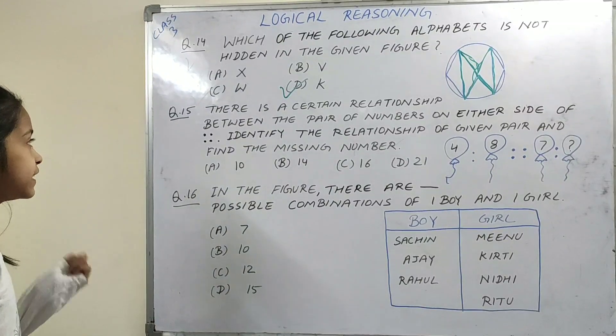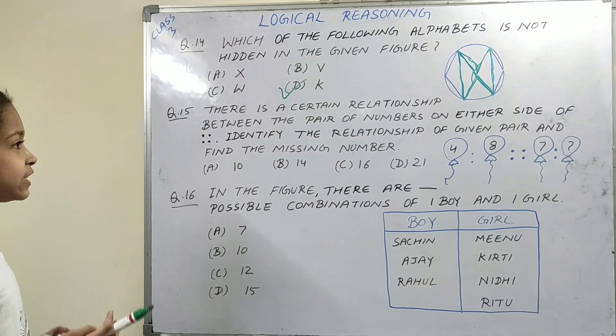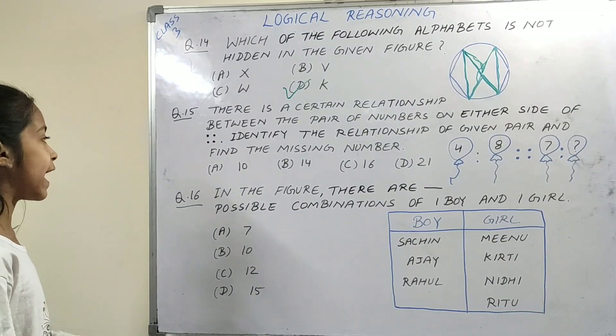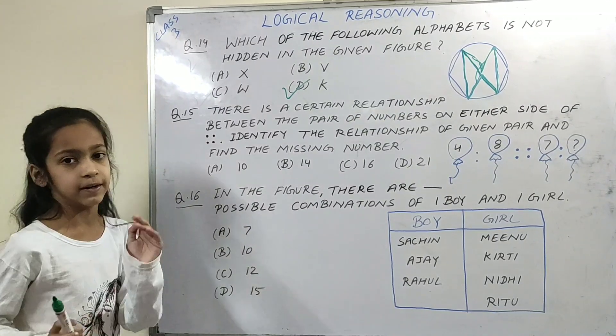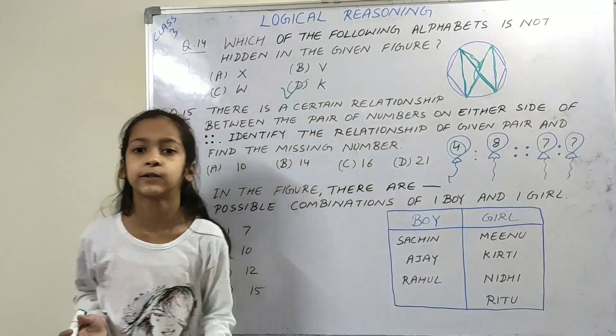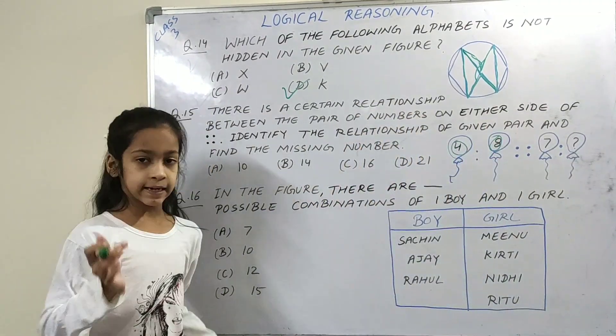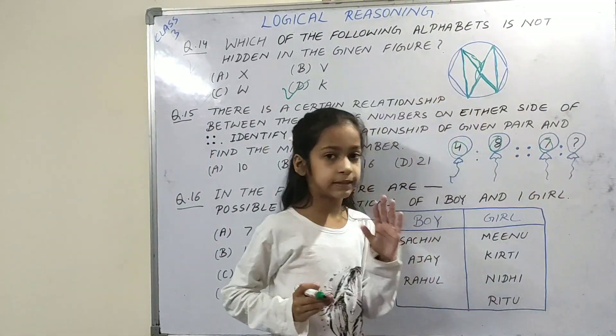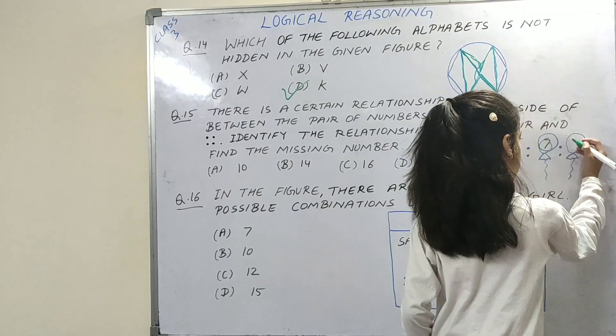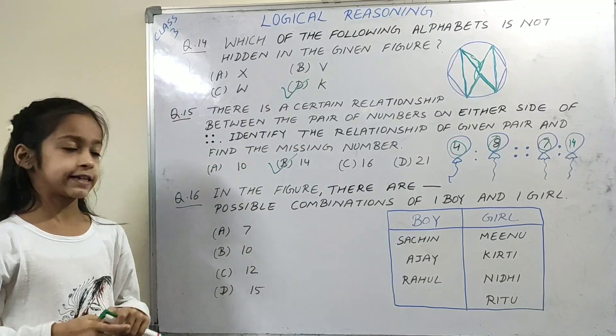Question number 15. There is a certain relationship between the pair of numbers on either side of proportion. Identify the relationship of the given pair and find the missing number. We are given 4, so we will multiply this number by 2, 4 to 8. We will give the number in the next balloon. 7 multiplied by 2 is 14. This is option B, 14.